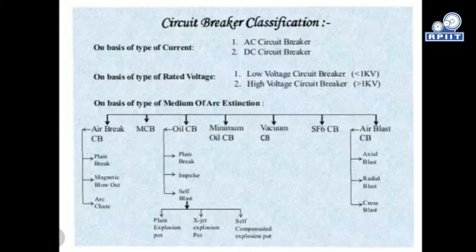On the basis of type of current, we know that current is of two types — AC and DC. Based on this, we classify circuit breakers as AC circuit breakers and DC circuit breakers. The AC circuit breaker works on AC supply and the DC circuit breaker works on DC supply.